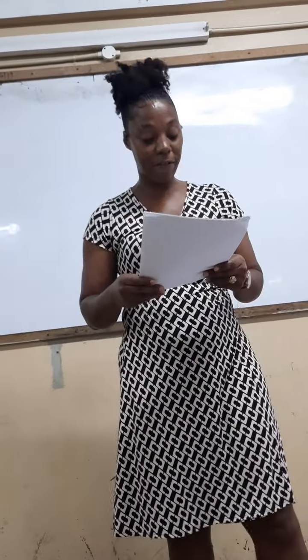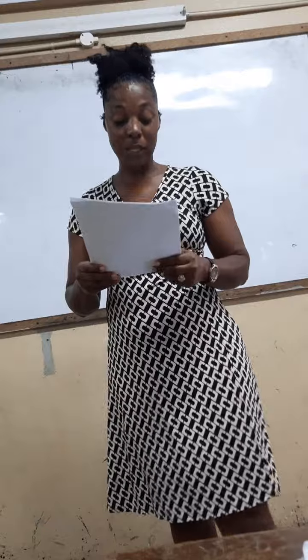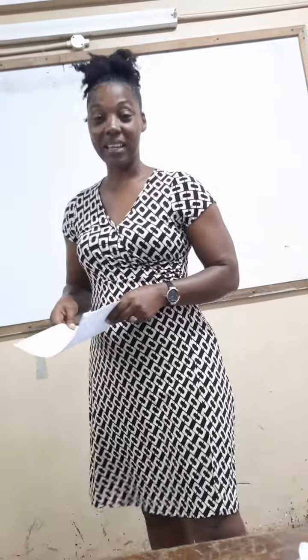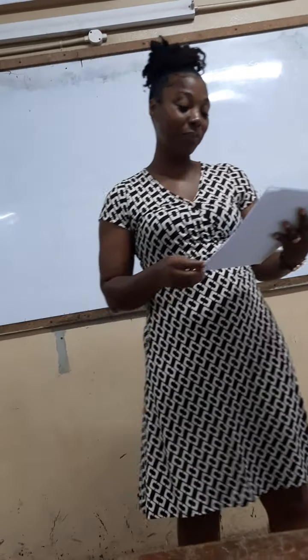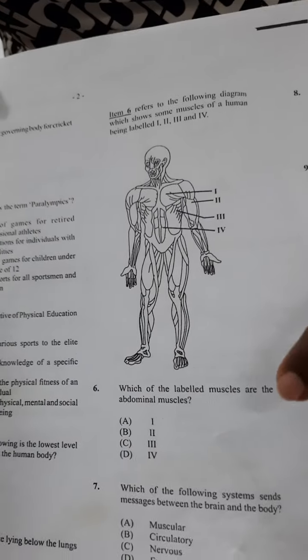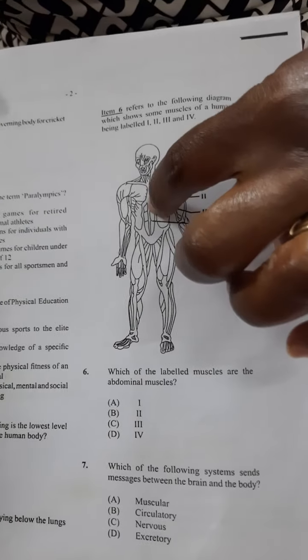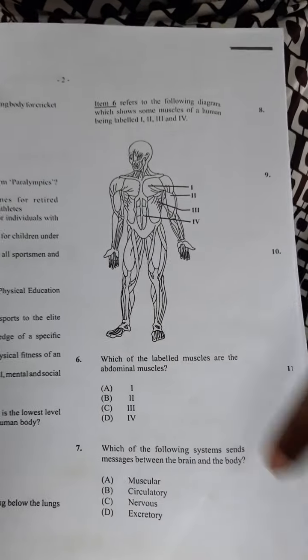Which of the following is the lowest level of organization in the human body? Is it a cell, organ, tissue, or system? It's a cell. The next question involves a diagram — which of the labeled muscles is the abdominal muscle? The abdominal muscle is right here, so the answer is D.